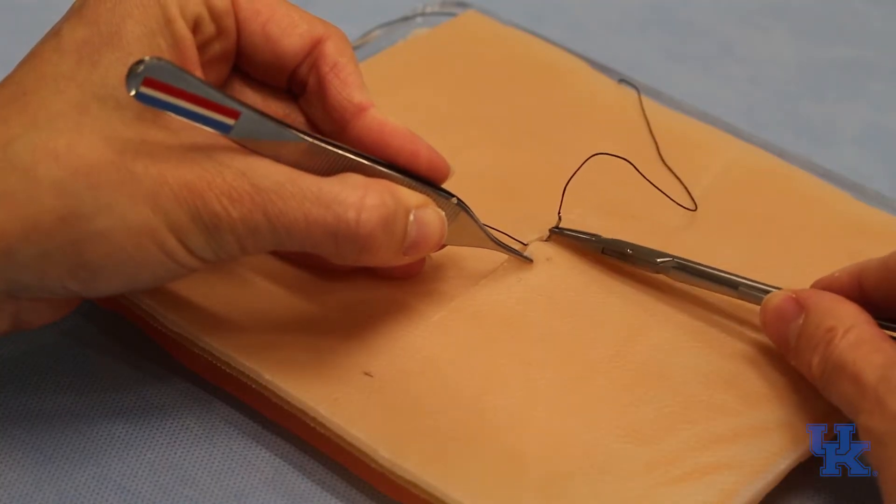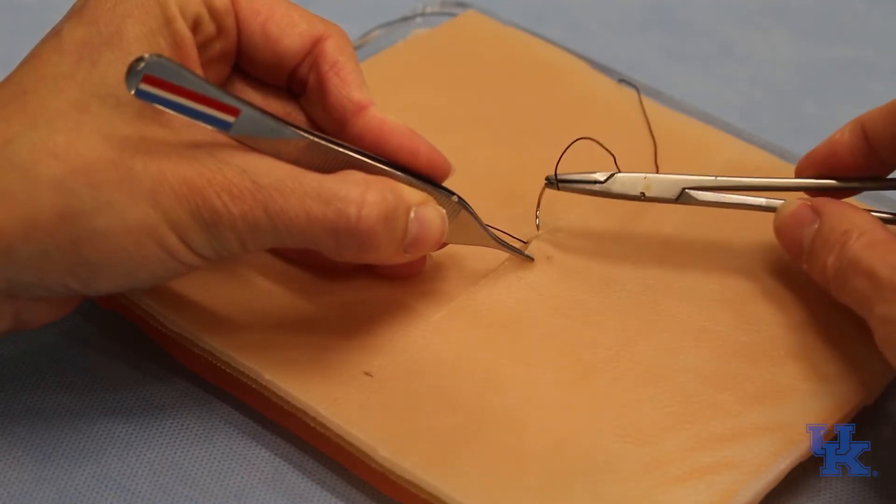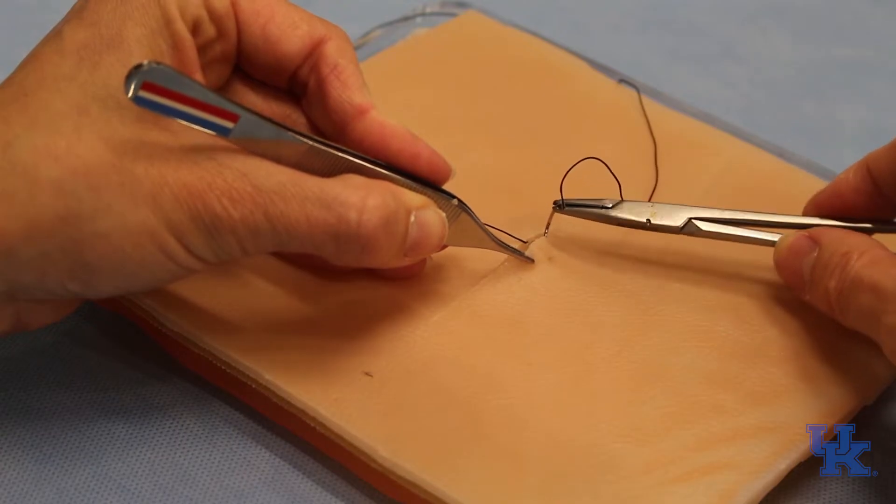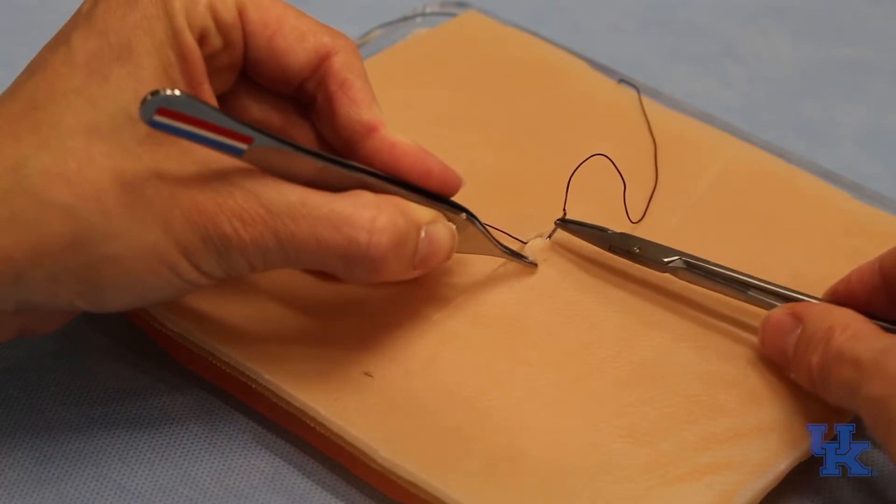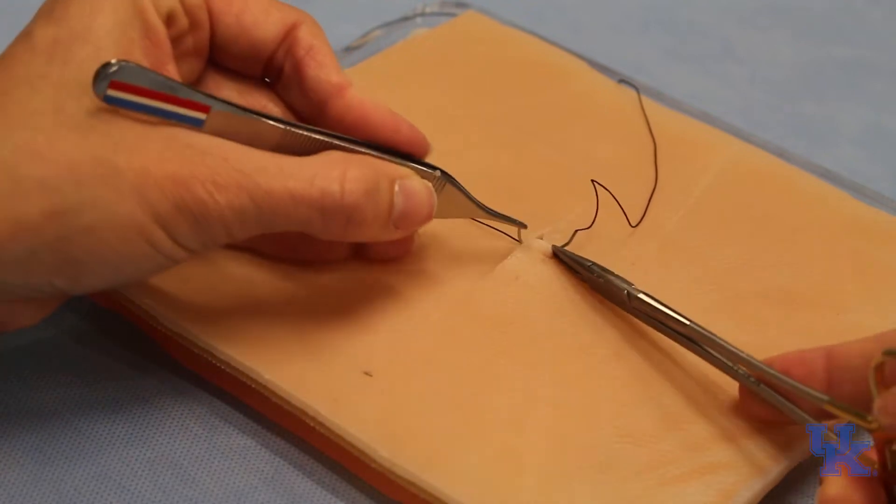Now what I see often is people want to do this. They want to skive. You want to try to get this to go in somewhat perpendicular. Rotate so you actually get some tissue, come back out at the skin edge.